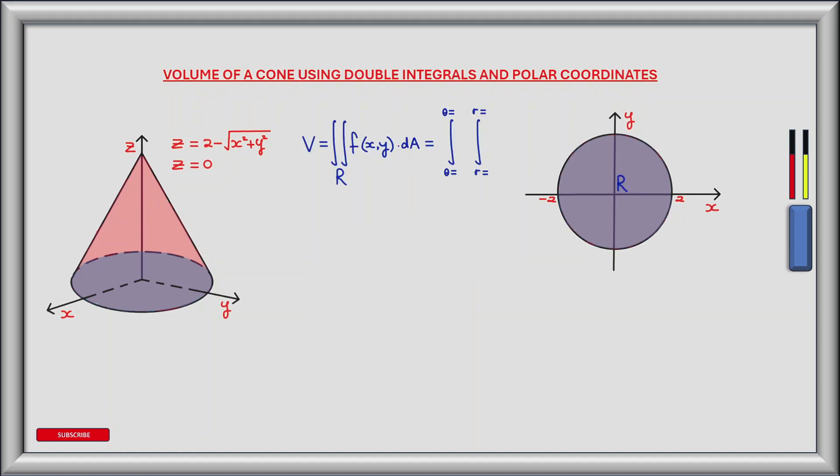Now let's look at what we need to do to find the volume. The volume is a double integral over the region R, which sums infinitesimally small pieces of area dA. These are multiplied by the height function f(x,y) to give infinitesimally small slices of volume.